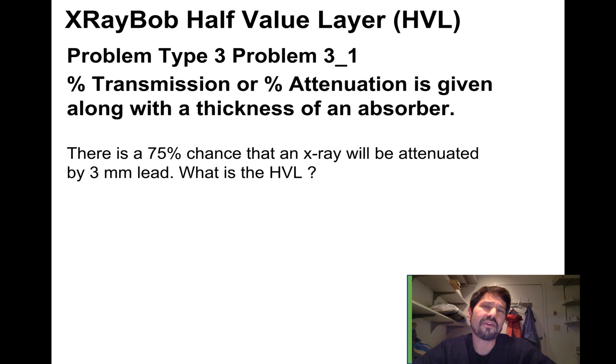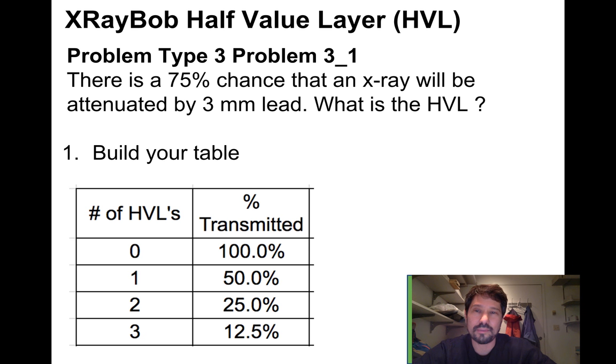The third type of problem is they're going to give you a percent transmission or a percent attenuation, and they'll tell you the thickness of the absorber. You'll have to calculate what a single half value layer is. Here we've got 75% chance that an x-ray will be attenuated by three millimeters of lead. What's the HVL? We'll start by building our table. At zero HVLs 100% transmitted. At one, half is.